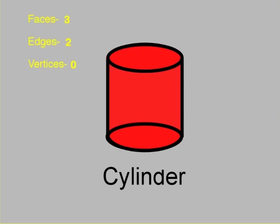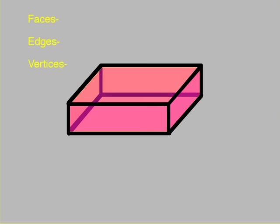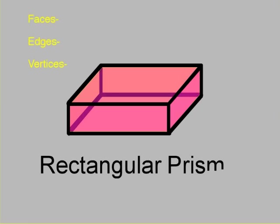Our next shape. Pause the video, come back and see how you did. This shape is a rectangular prism. It has six faces, 12 edges, and eight vertices. You're gonna see this pattern repeat itself over and over.